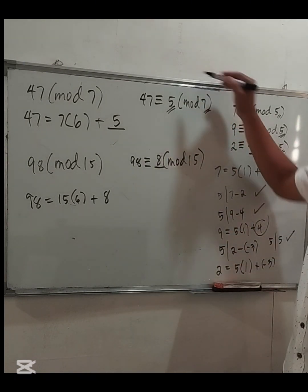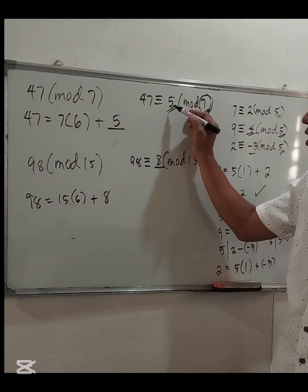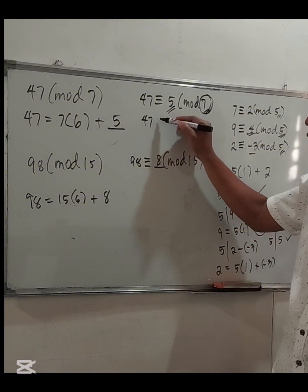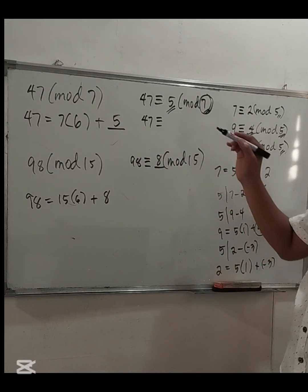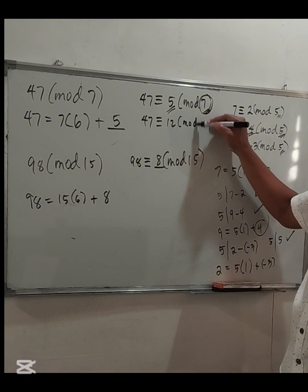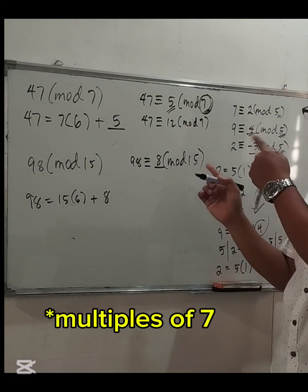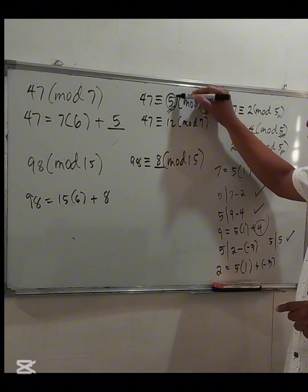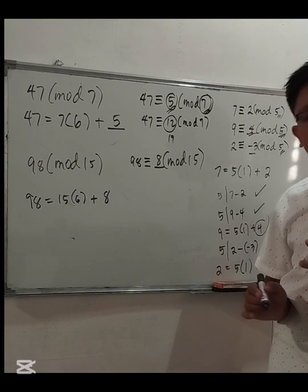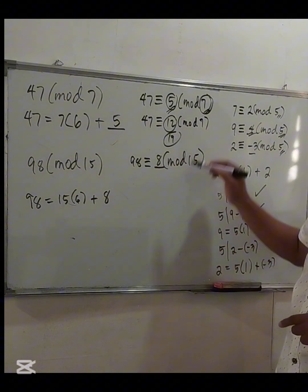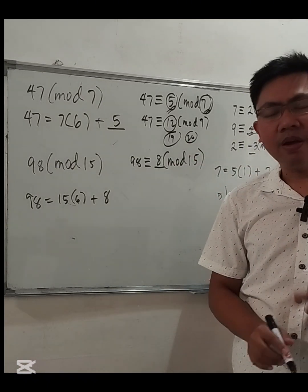Note that we can add or subtract multiples of the modulus. For 47 mod 7, the answer is 5. We can add 7 to get 12, and 47 is also congruent to 12 modulo 7. Adding another 7 gives 19, then 26, and so on. We can also use negative numbers by subtracting multiples.